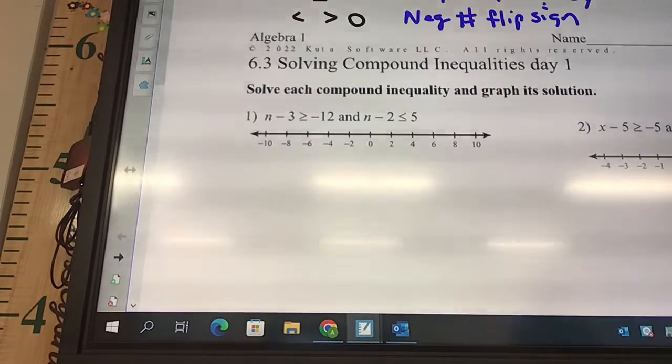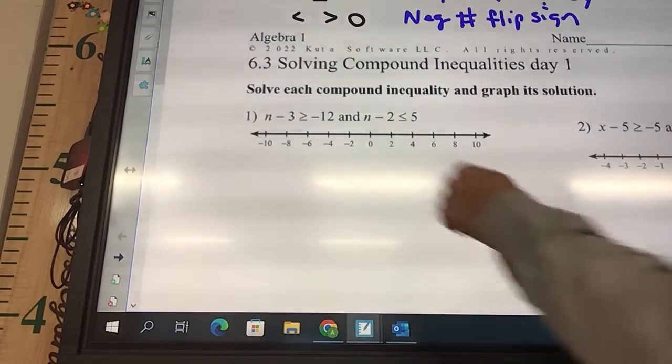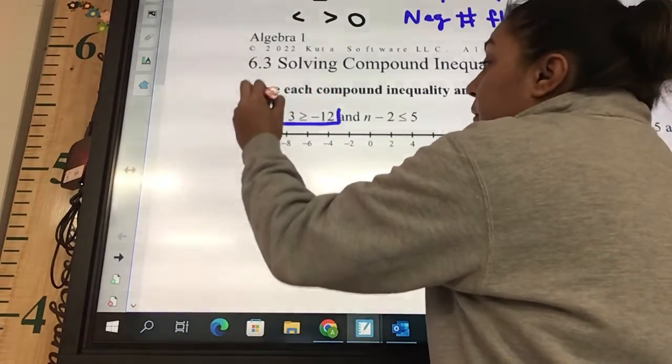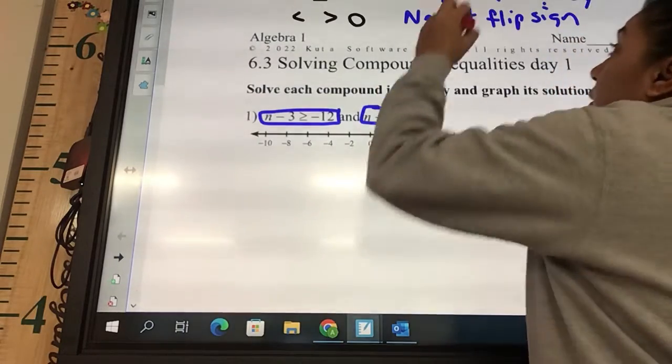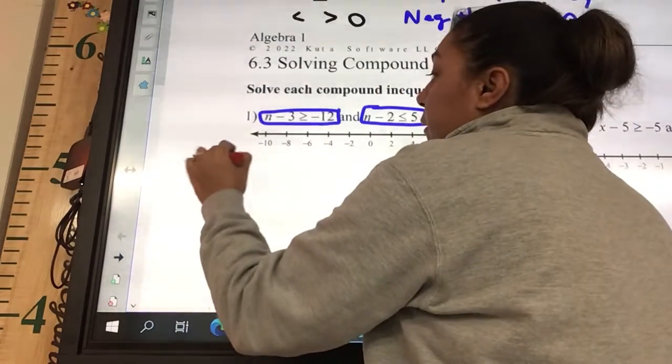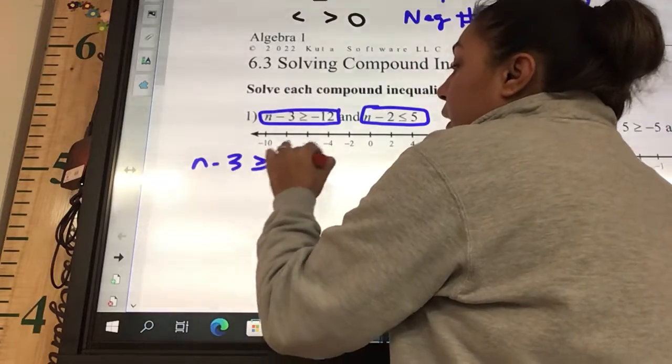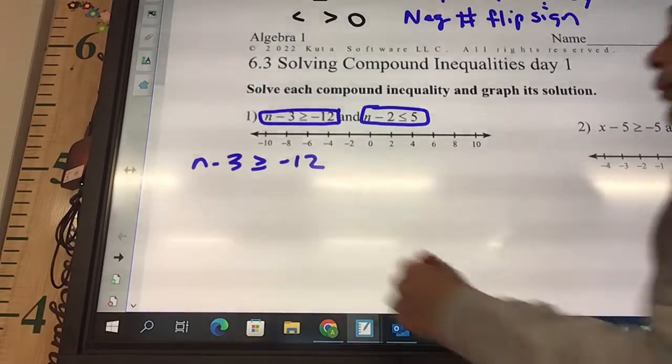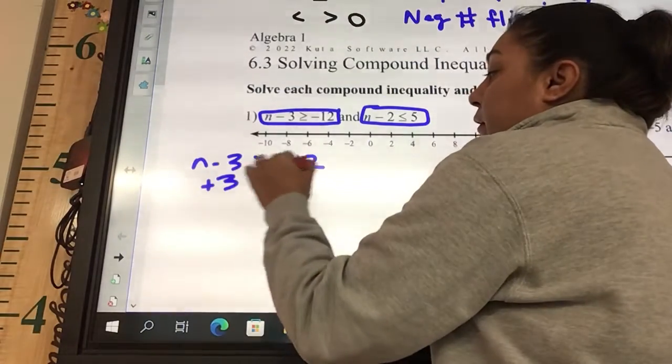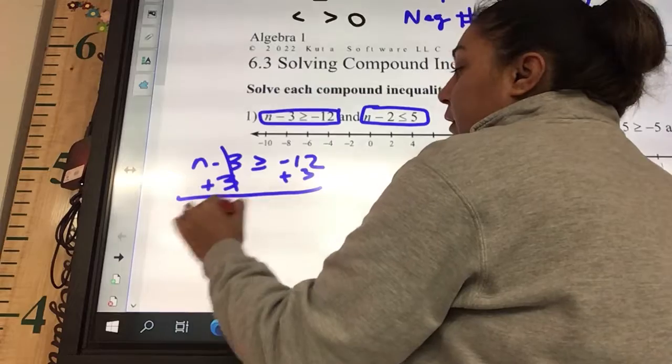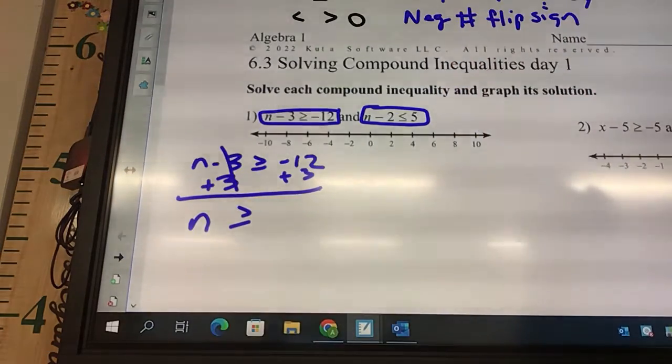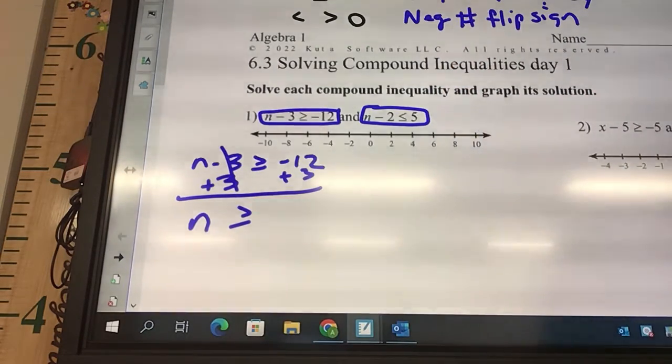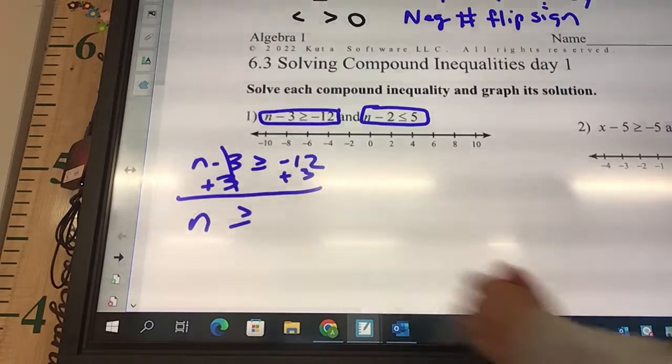If we look at this first one, you solve these totally separate. This is one equation, and then this is a whole other equation. If we're looking at the first one, n-3≥-12, how do I solve for n? We're going to plus 3. What is negative 12 plus 3? Negative 9.